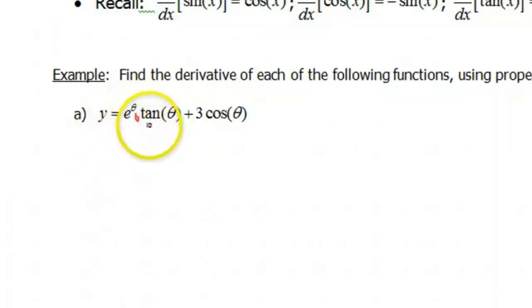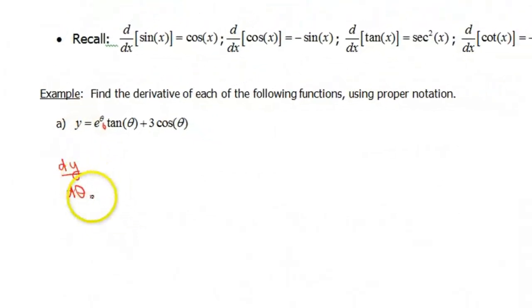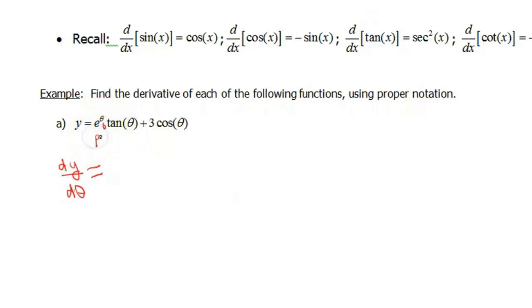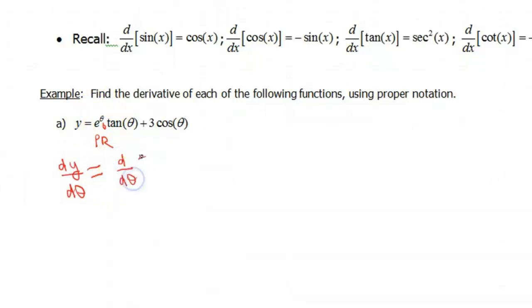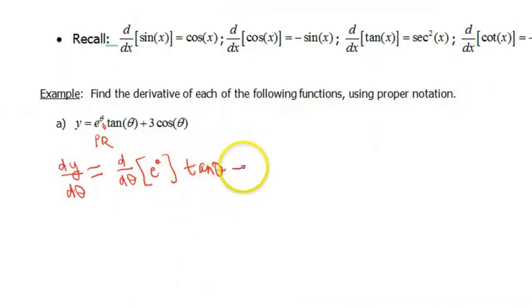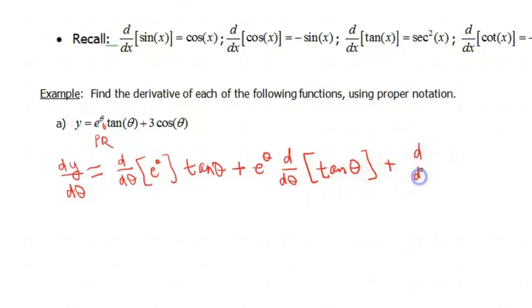So I'll write dy/dθ, because we're taking the derivative of y with respect to theta. You could also call it y prime if you want — I just like to mix up the notation. So e to the theta times tangent theta — because this is a product, we're going to need the product rule. That says you take the derivative of one function times the other, plus the derivative of whichever one you didn't do times the other function.